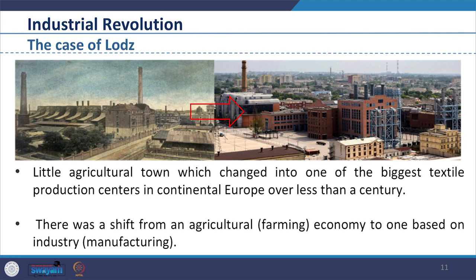For example, Lord's Agriculture Town in Poland — popularly known for this transition — was completely transformed into the biggest textile center of Europe. Let us now look into how the Industrial Revolution swept across different countries.